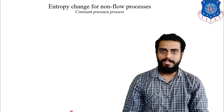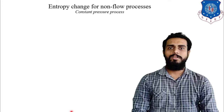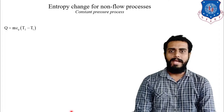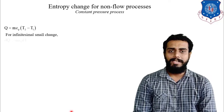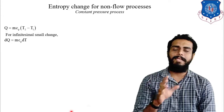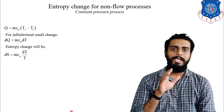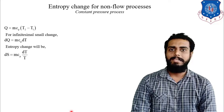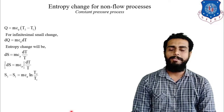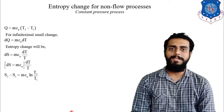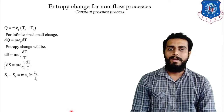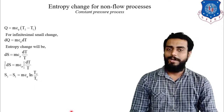For the constant pressure process: Q = M·CP·(T2 − T1), so dQ = M·CP·dT. Since dS = dQ/T, we get dS = M·CP·dT/T. Integrating, the entropy change is S2 − S1 = M·CP·ln(T2/T1).